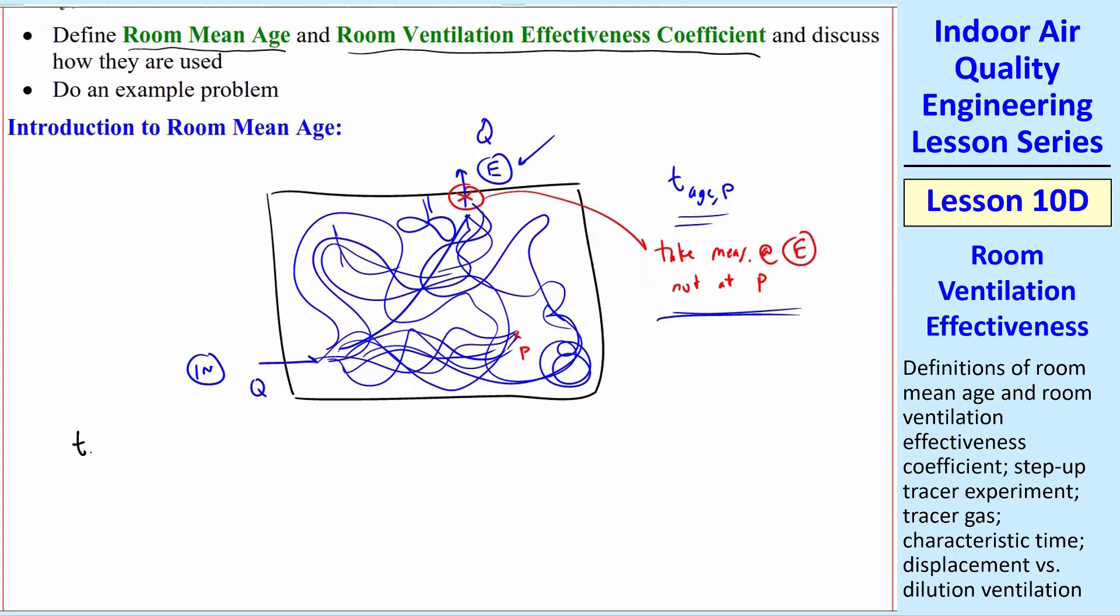We're going to define T room average as the room mean age. So it's not a local mean age, it's a room mean age. It's averaged over the whole room then. In other words, it's a global property of the room, like Tn was, that average residence time, Tn.